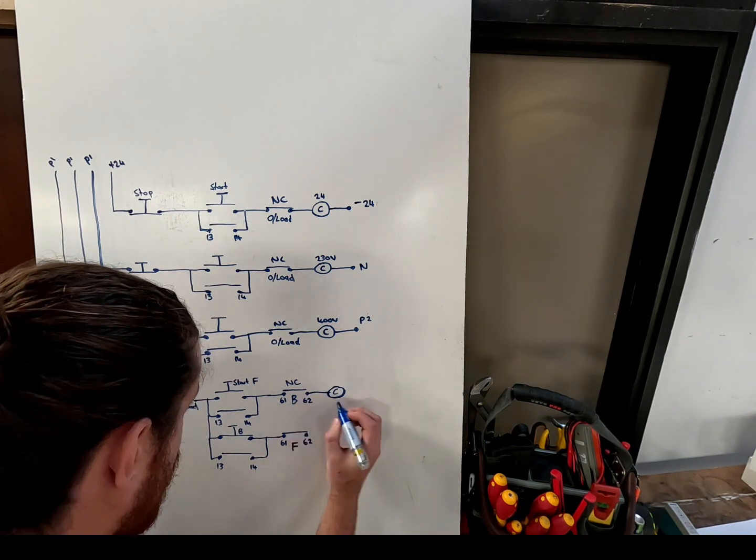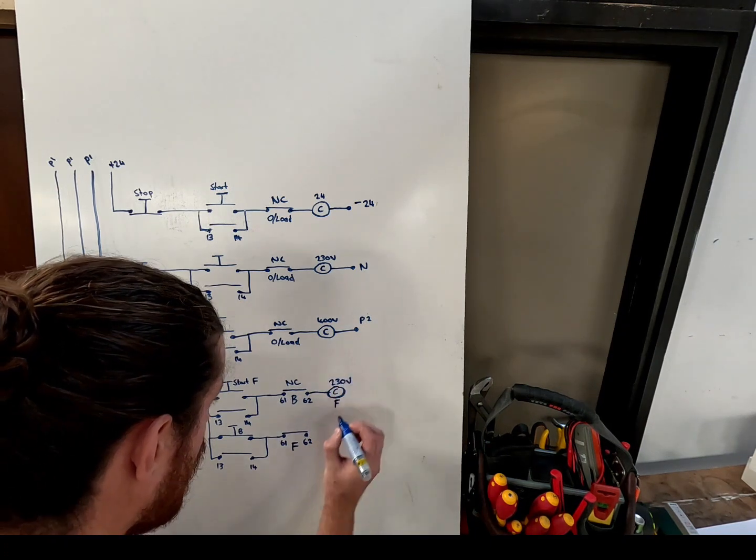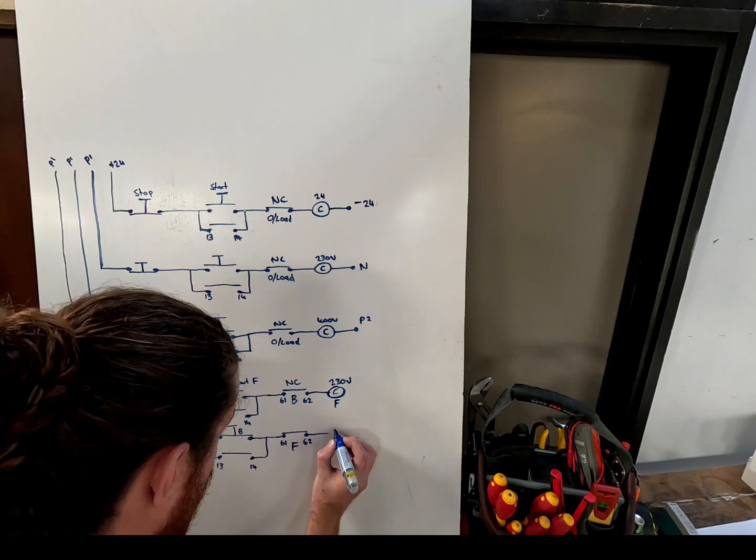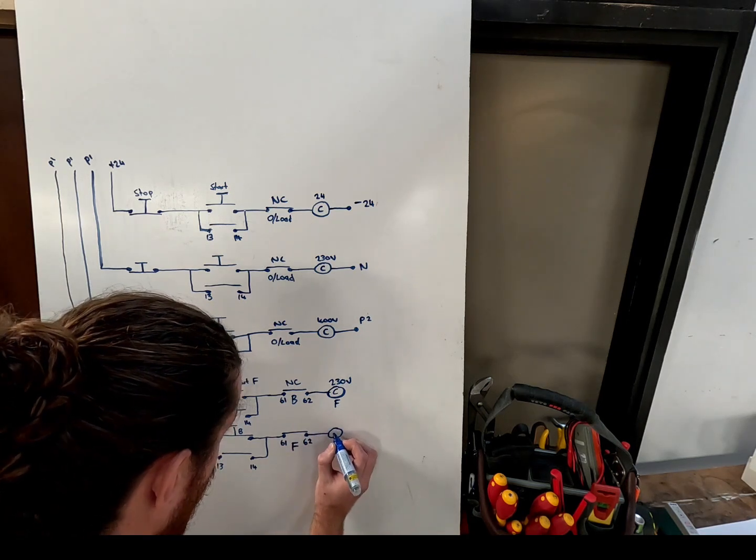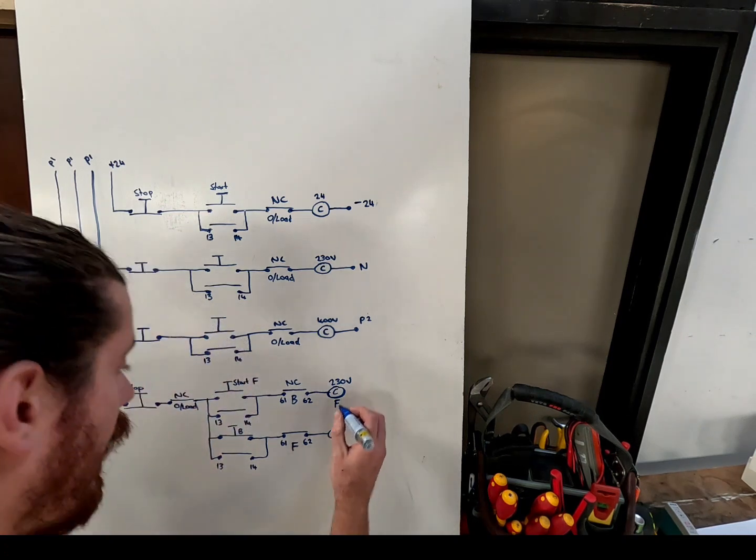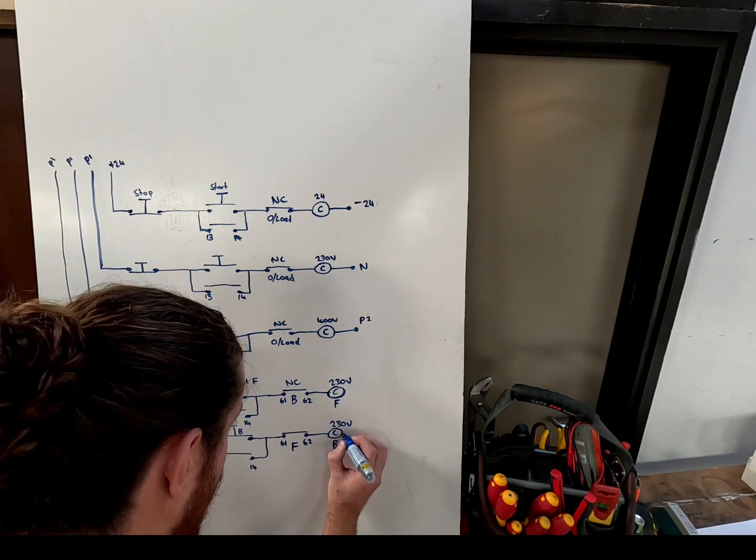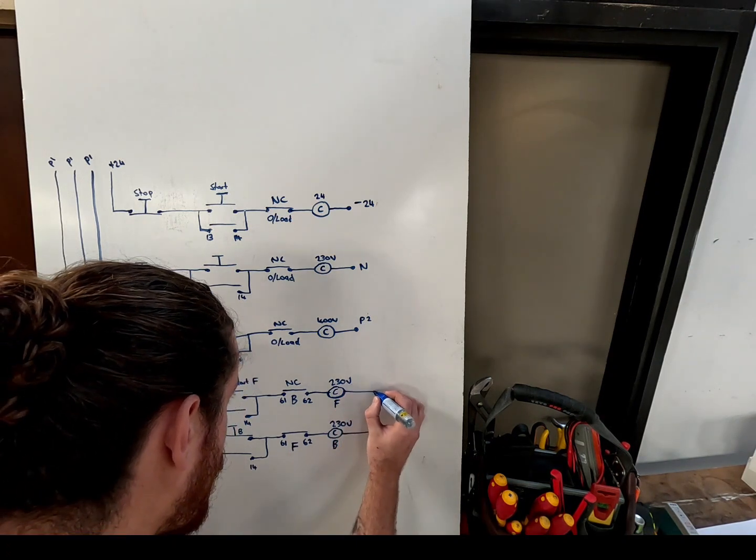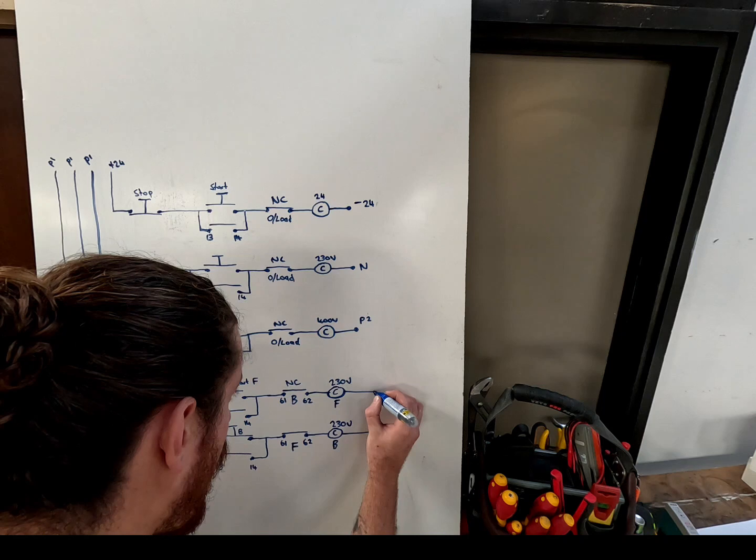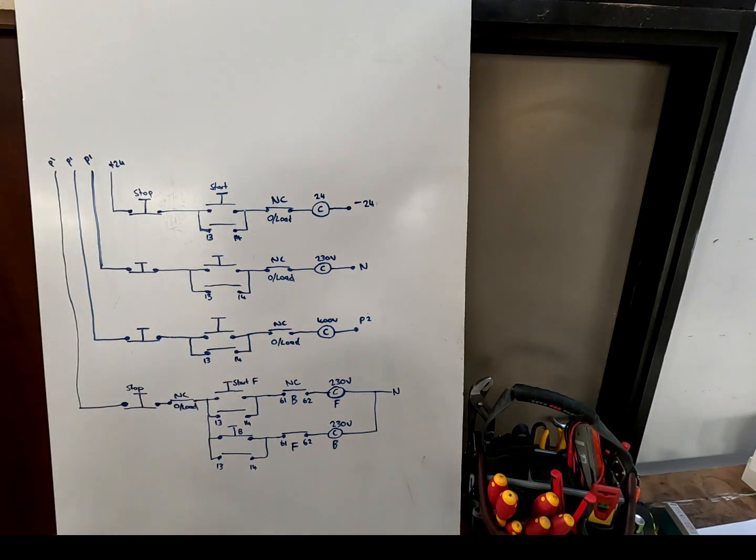Coil and this is the forwards coil and it's a 230 volt coil on this contactor. This one goes to the reverse or backwards, and that is also a 230 volt contactor. They then both can go off to the neutral. Just like that.